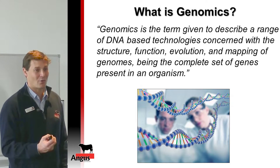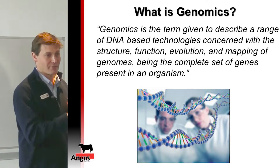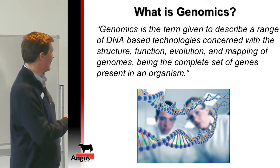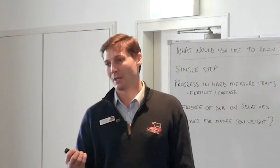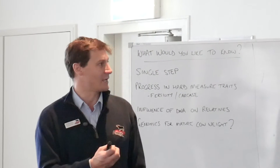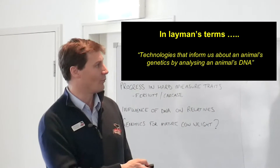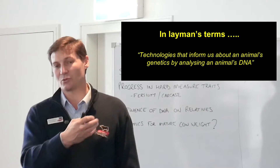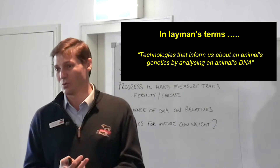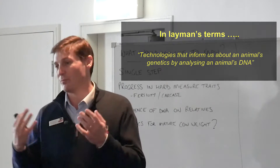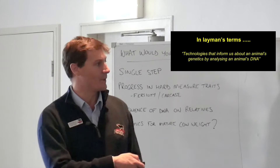If we try to describe genomics, really what we're talking about is a term given to describe a range of DNA-based technologies. So the first thing is we're dealing with technologies that are based around an animal's DNA, concerned with the structure, function, evolution and mapping of genomes — with genomes being the complete set of genes present in an organism or animal. Basically, it's technologies that inform us about an animal's genetics by going in and analysing that animal's DNA — across things like its pedigree, whether it's carrying genetic disorders, or whether it's got favourable traits for important production traits.